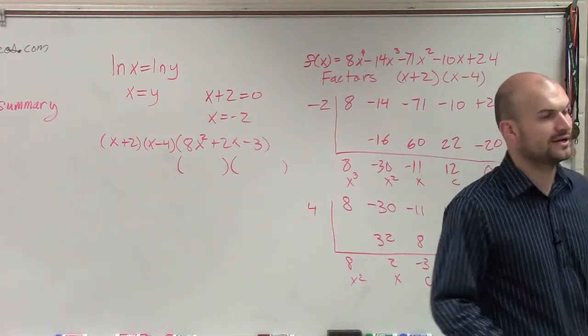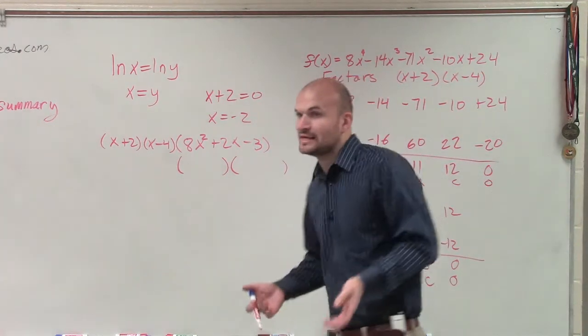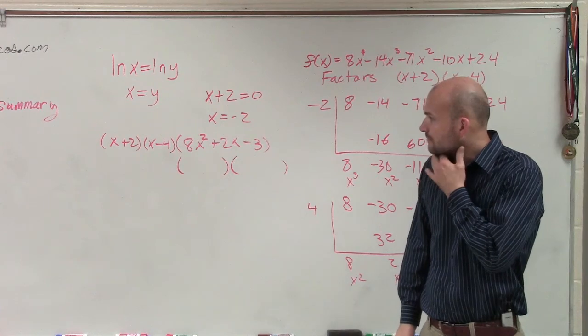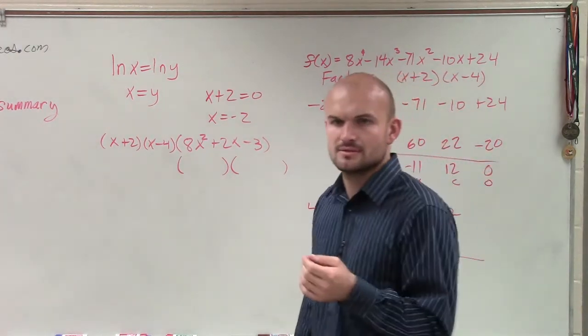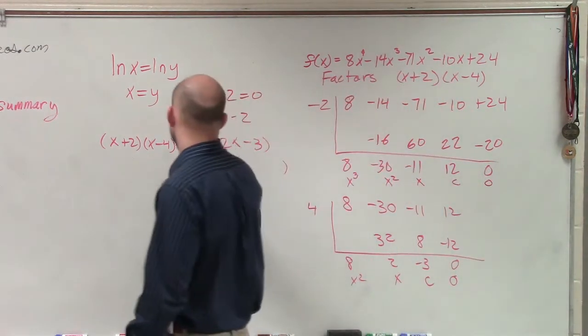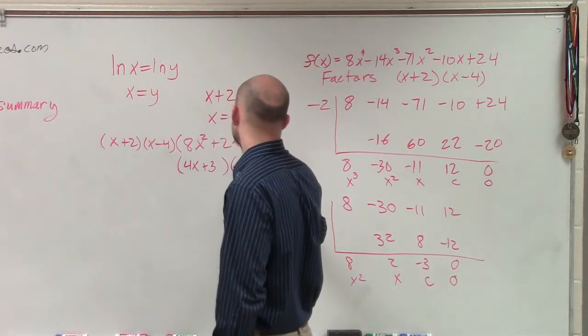Now, notice, again, to multiply to give me negative 3, one of those numbers has to be negative, right? Your factors of 3 have to be negative. So let me try (4x+3)(2x-1). 4x plus 3, 2x minus 1.